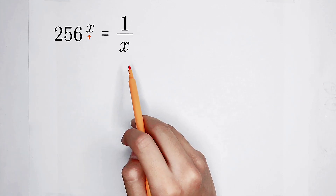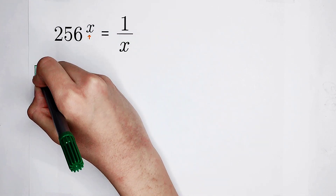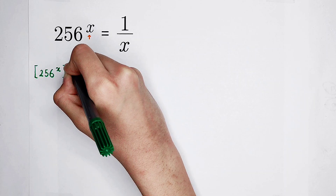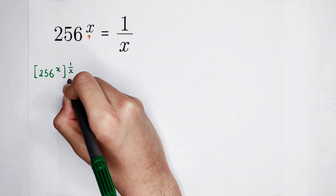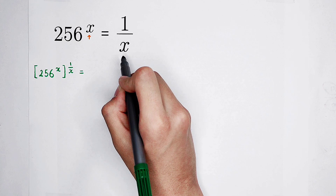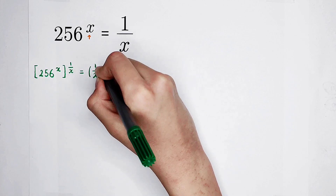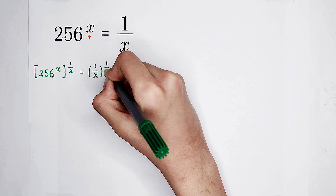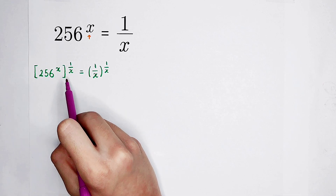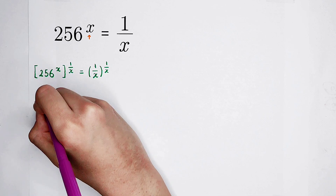Of course, we can raise both sides to the power of 1 over x. For the left-hand side, it will become 256 to the power of x, and then to the power of 1 over x. This x will disappear, because h to the power of m and then to the power of n equals h to the power of m times n, and x times 1 over x is 1. So the left-hand side is just 256.